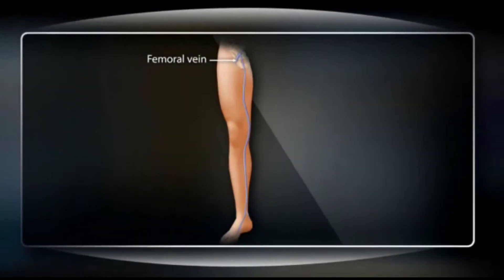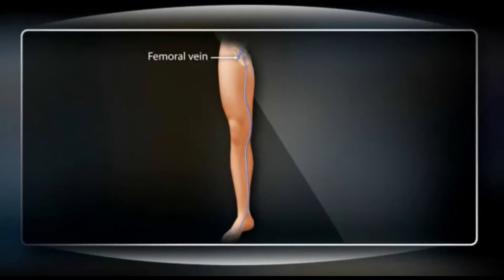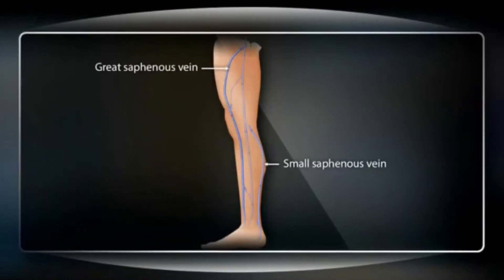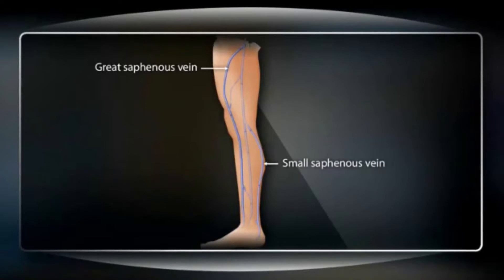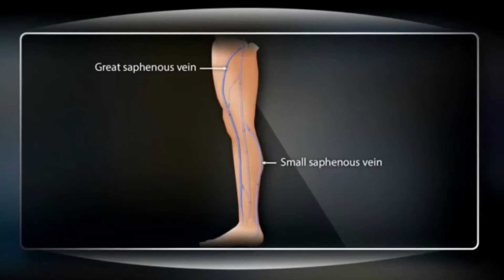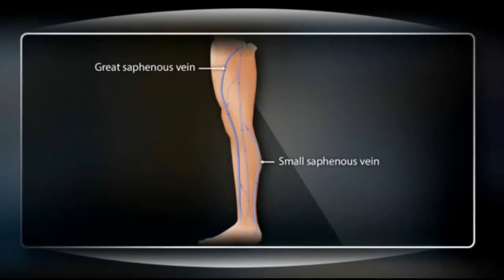Veins are thin-walled, highly distensible, and have the capacity for two-thirds of blood flow. They are divided into two parts: deep leg veins and superficial veins. Deep leg veins carry 90% of venous return of the lower extremities and consist of the femoral vein, which lies near the femoral artery below the inguinal ligament. Superficial veins are subcutaneous, such as the great saphenous vein, which lies medially from the dorsum of the foot to the groin, and the small saphenous vein, which lies from the side of the foot to the back of the knee.